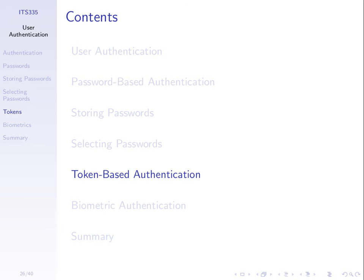One that you use on a regular basis today is your mobile phone. You can think of that as a token, in that having it in your possession allows you to do certain things. Like when you try to do a bank transaction, the bank may send you an SMS or a message saying here's your one-time password. You need to have your mobile phone to receive that message. So that's a combination of using passwords, but the presence of your phone is necessary for that to work.